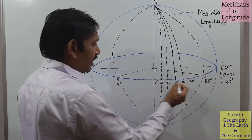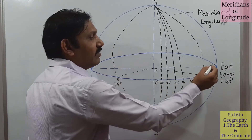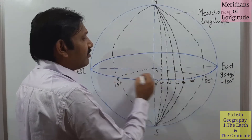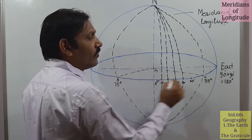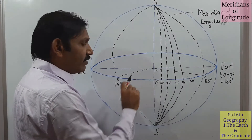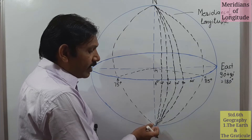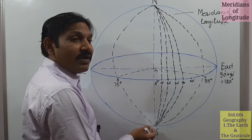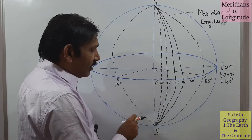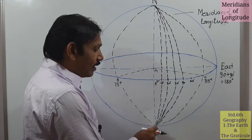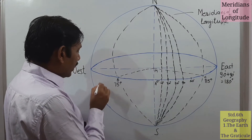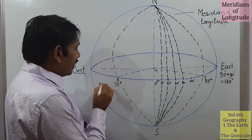We know this is the equator — the largest circle on the earth. This is called the parallels of latitude. The adjacent distance between the parallels is equal from one to the end of the hemisphere. Just the ellipses go on decreasing, but the distance is the same — one hundred and eleven kilometers.